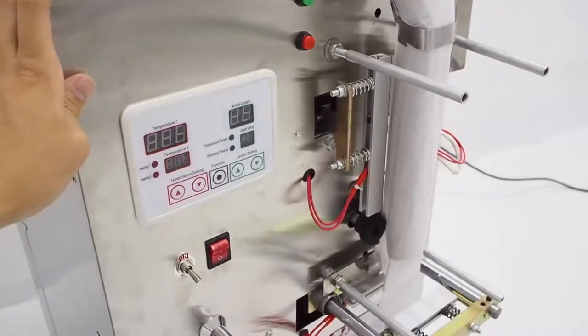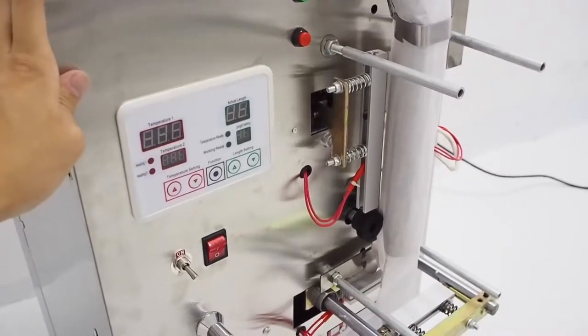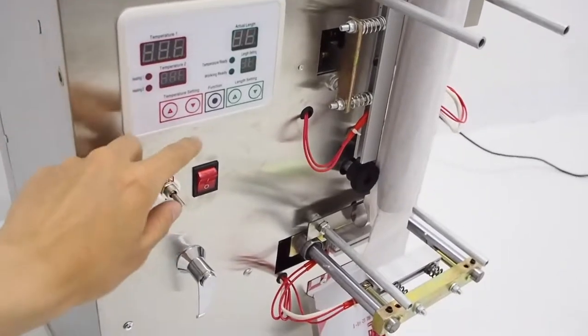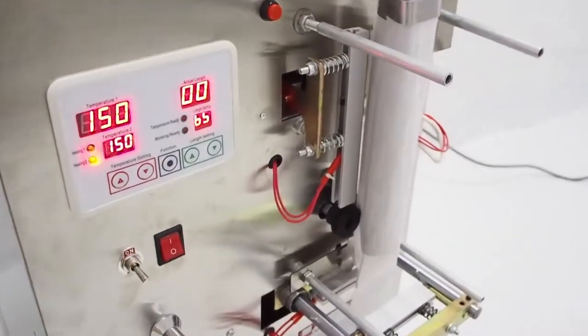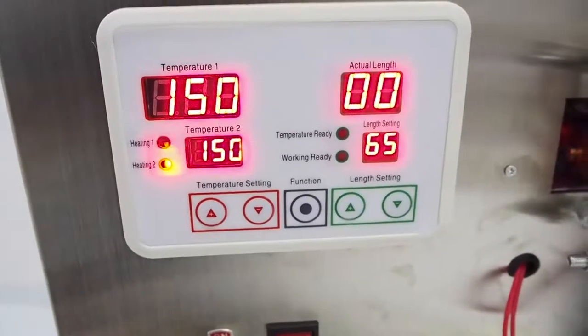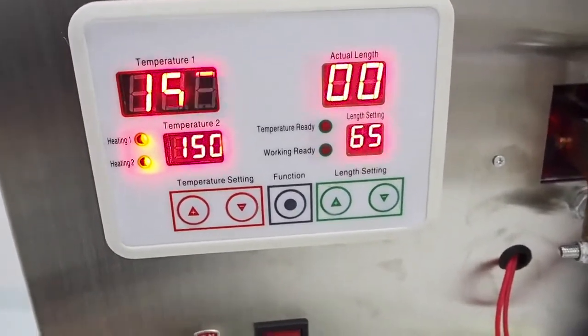Now all the basic setting is done. We can actually start testing this packing machine. Power on. And then you can see the temperature right now it's set to 150 celsius.